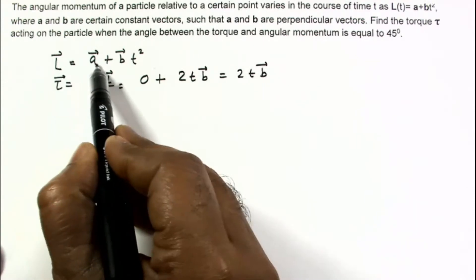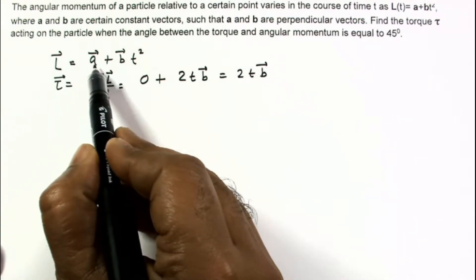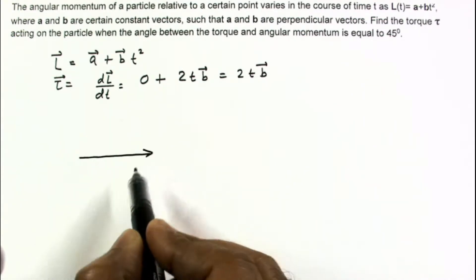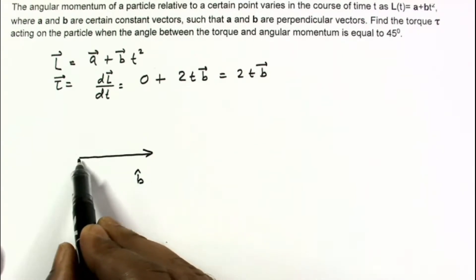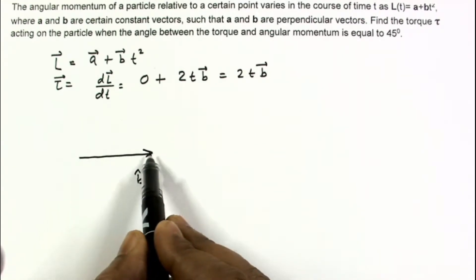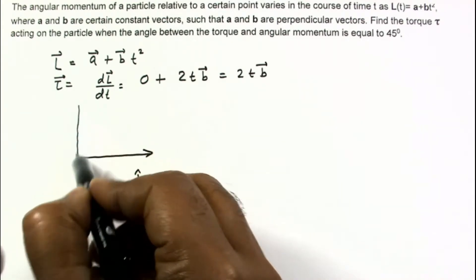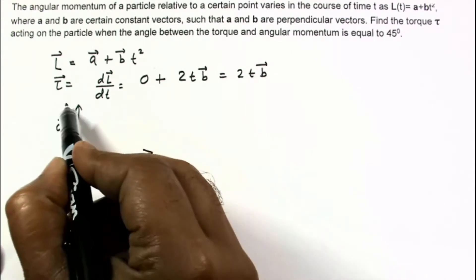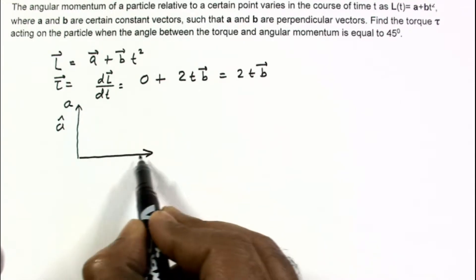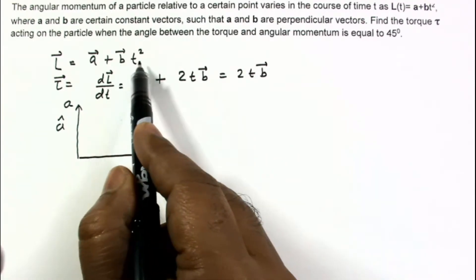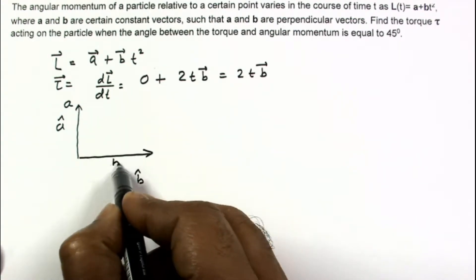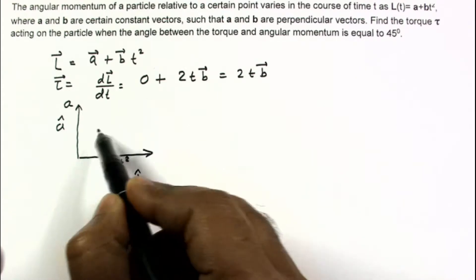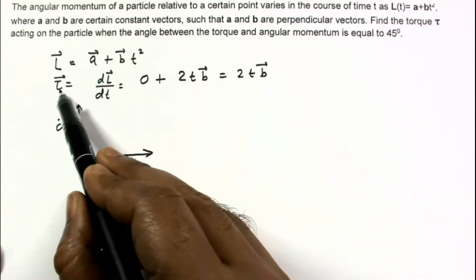Since l = a + bt², these are two components of angular momentum and these two components are perpendicular to each other. Suppose this direction represents the direction of b vector — that is b-hat. And this direction represents a-hat. The a component remains constant with magnitude a, while the bt² component grows with time, its magnitude increasing as bt².